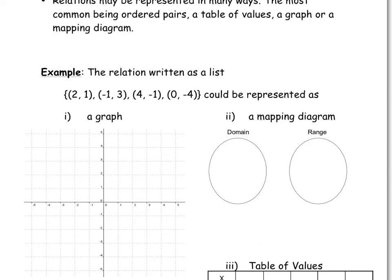Here is a relation written as a list. Notice there is a list of four points — each written as an x, y point. So whenever you give a list of points, in terms of regular mathematics, you're always going to write it in terms of x and y.